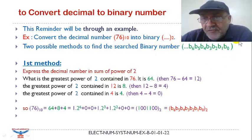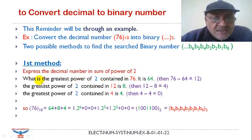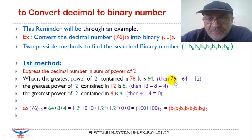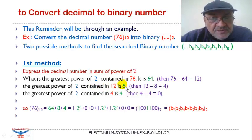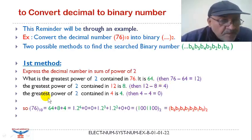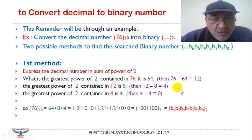The first method consists in expressing the decimal number as a sum of powers of 2. What is the greatest power of 2 contained in 76? It is 64. Then 76 minus 64 gives 12. What is the greatest power of 2 contained in 12? It is 8. Then 12 minus 8 gives 4. Finally, what is the greatest power of 2 contained in 4? It is 4, and 4 minus 4 gives 0.